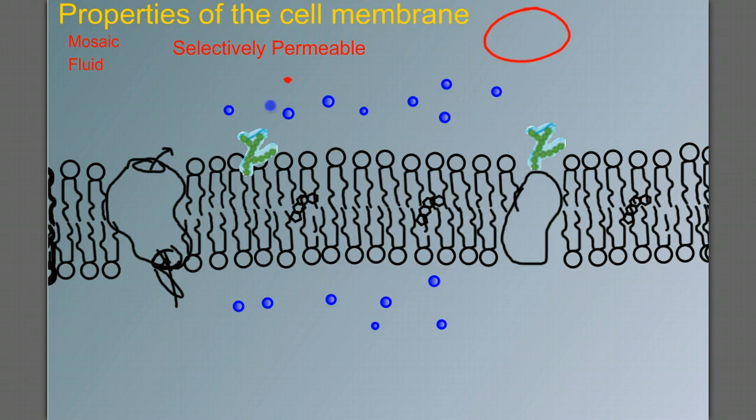How about this? What if this particle were a charged particle, an ion? It turns out that ions have a very difficult time making it through the cell membrane, even if they're small.